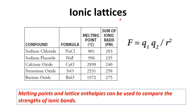So first of all, let's talk about ionic bonding. Ionic bonding is found in ionic lattices. You can also call them ionic solids or ionic compounds. Ionic compounds are formed by the gaining and losing of electrons.